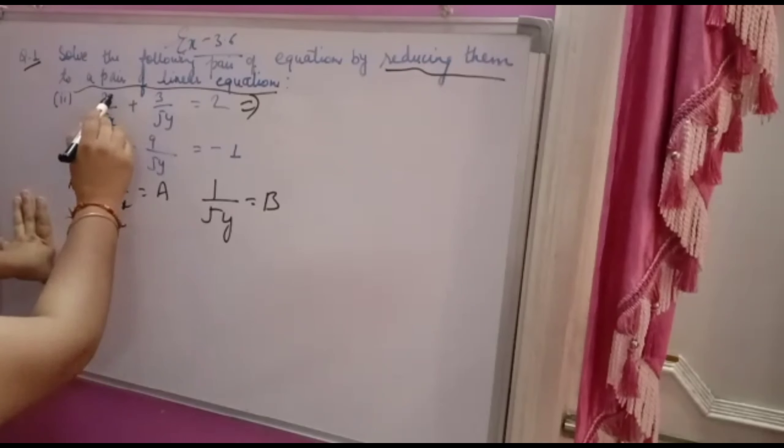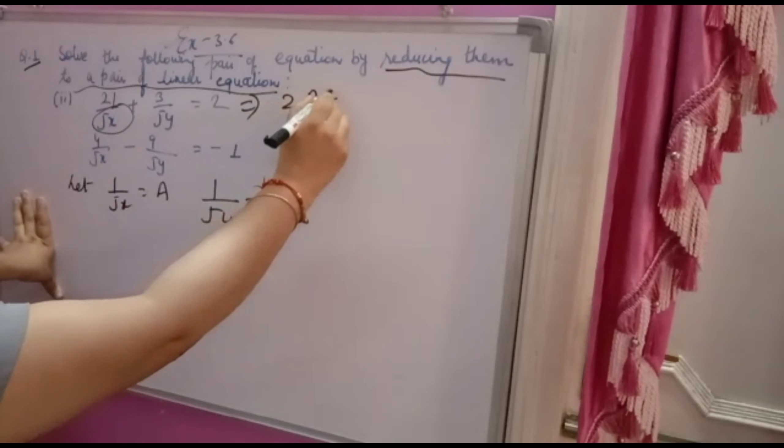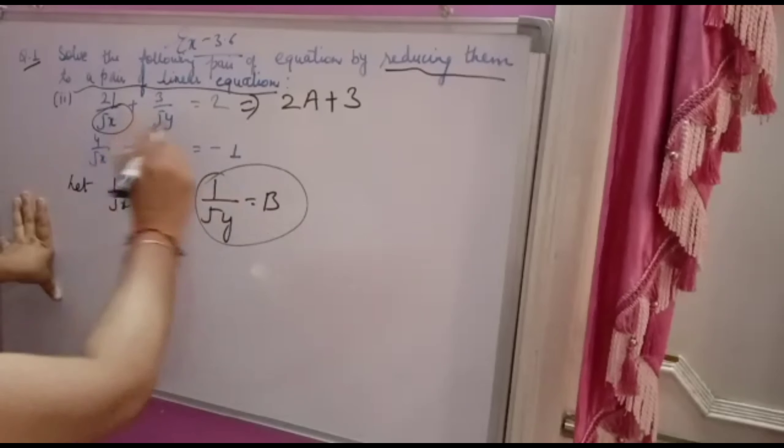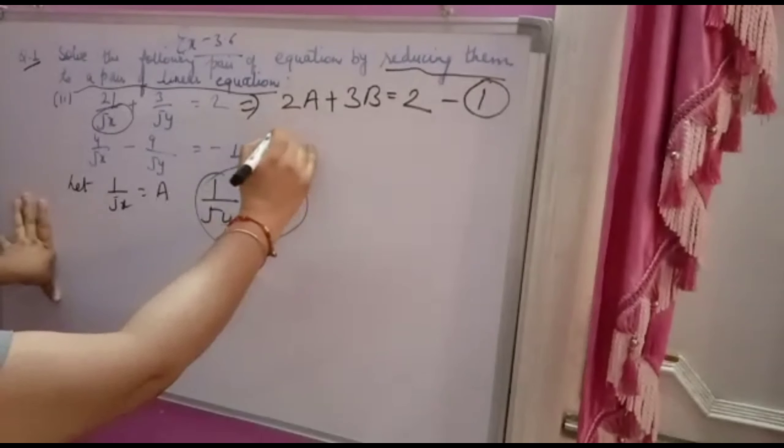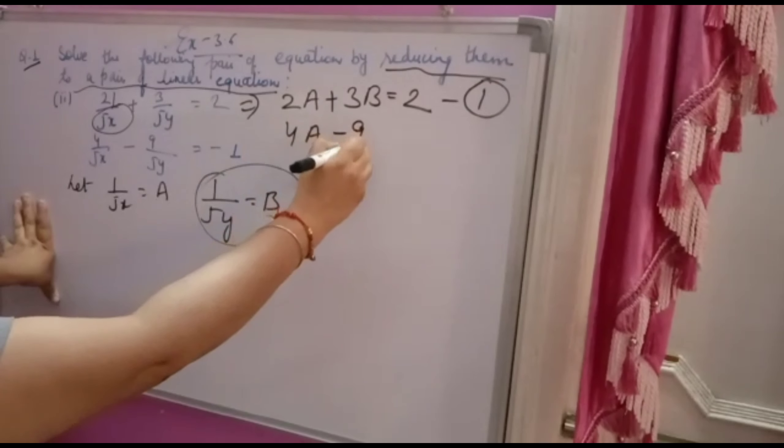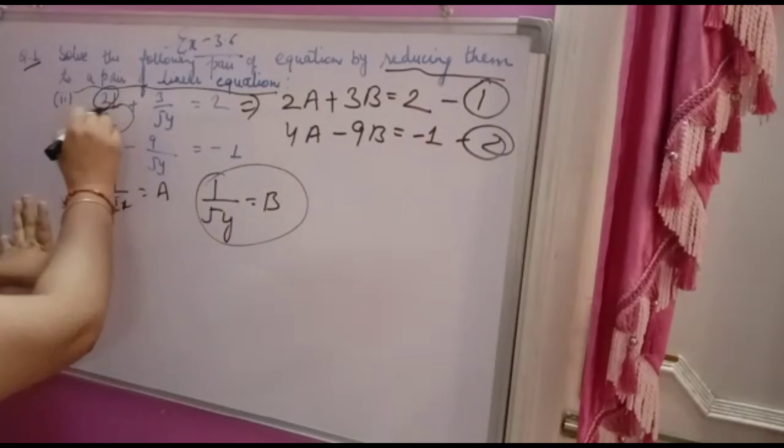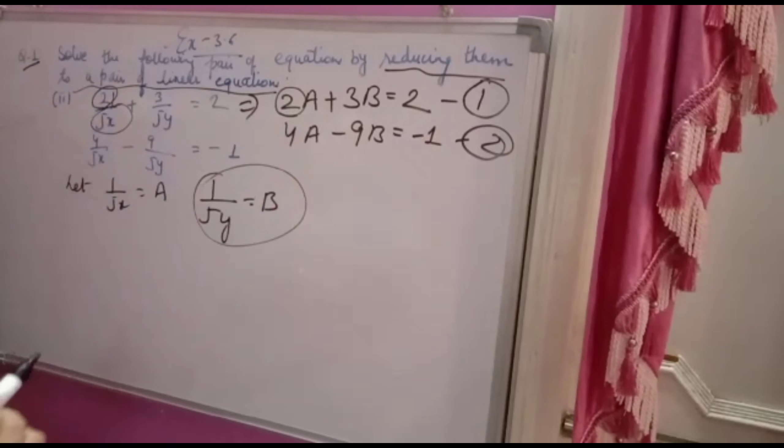Suppose you are putting it, so you will get in place of 1 over root x, you have to put A. So you will get 2A plus 3, and 1 over root y you have to put B, so 3B is equal to 2. That's the first equation. In the second equation you will put and you will get 4A minus 9B is equal to minus 1. Take care: if 2 is upside, it will remain upside only. In first part it was downside, so it came down.